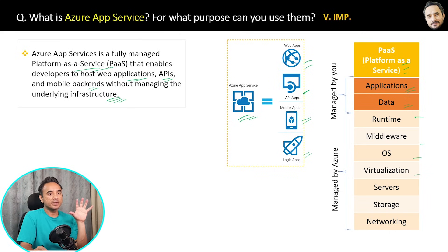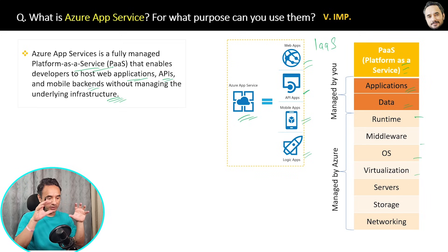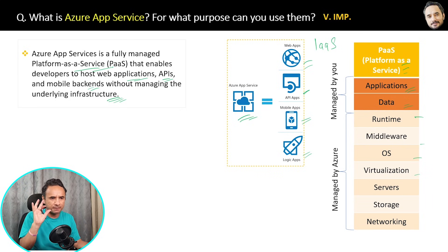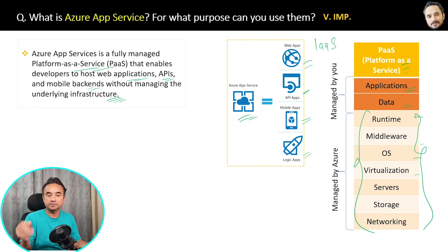Now you might ask: when we already have Virtual Machines to host applications, why do we need Azure App Service? Virtual Machines are an example of IaaS — you only get the server, and you have to manage the OS, middleware, storage, and everything else. It is a blank server. Azure App Service is more abstract — you do not have to worry about all those things, because they are managed by Azure.